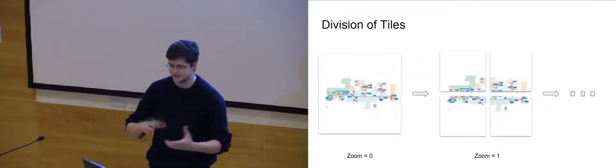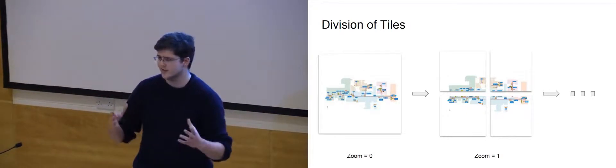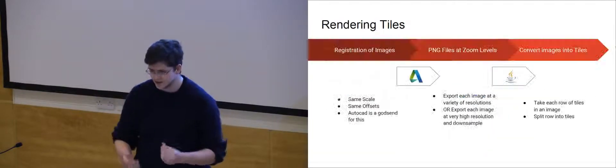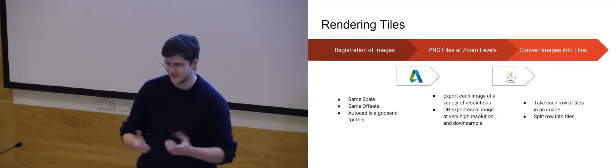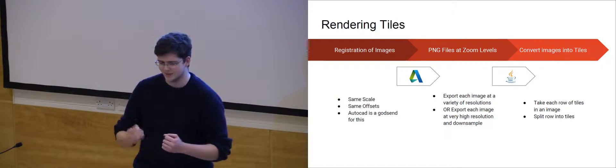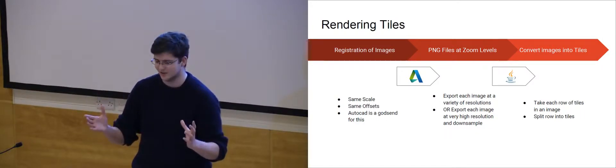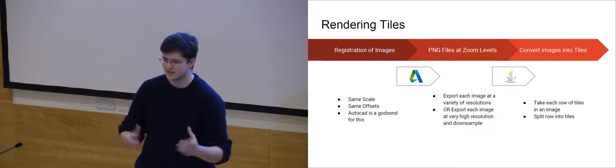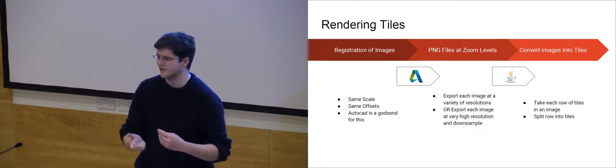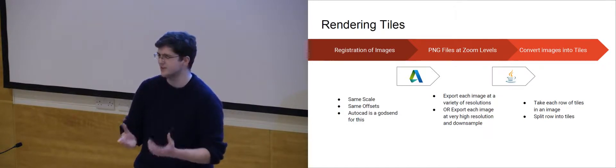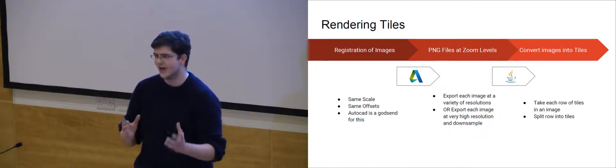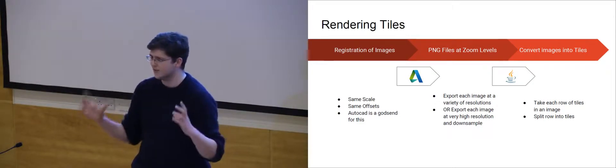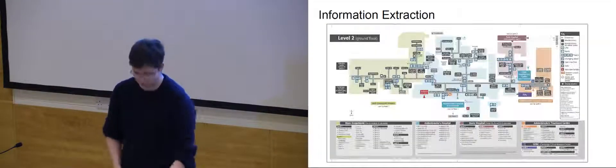The way that maps works is you have various zoom levels, and they're made up of tiles, which are all of a constant resolution. So that meant that we had to essentially create a pipeline for that. So the first step was to take our vector images and then make them all the same scale and the same size. And specifically, we used AutoCAD for this. And then we exported each of the images at a variety of resolutions and then imported them into Java, where we then took each row and converted that just into tiles for efficiency reasons.